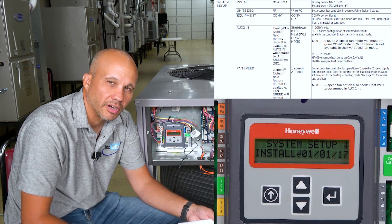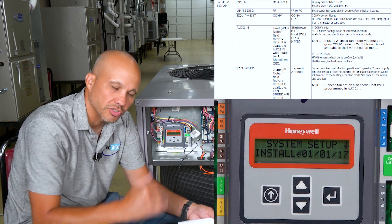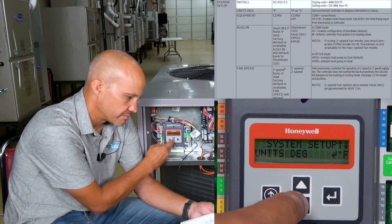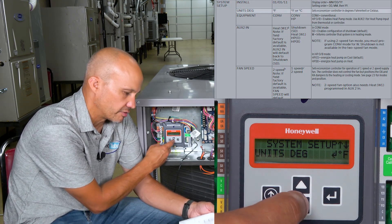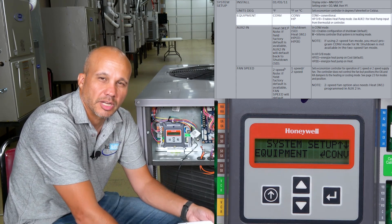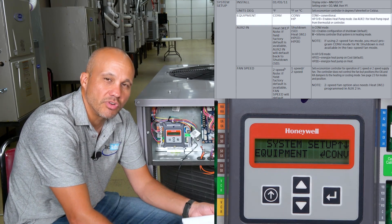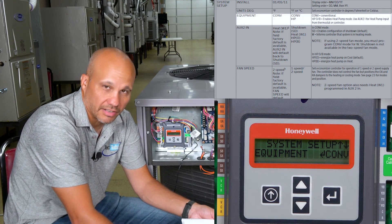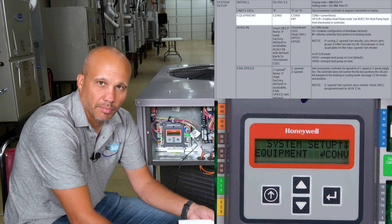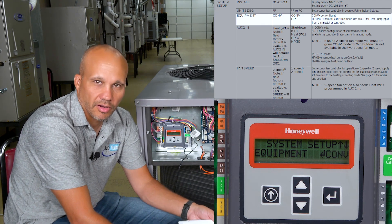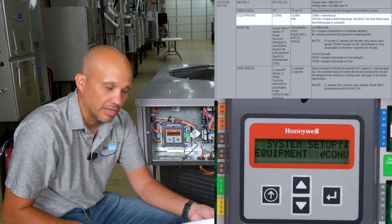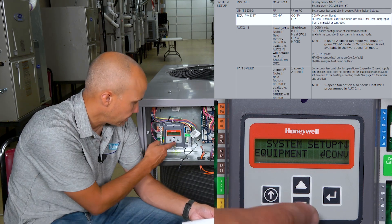The menu goes sequentially in order — we'll skip a few to save time. Install date is self-explanatory. Degrees Fahrenheit or Celsius is self-explanatory. Equipment: Conventional or Heat Pump. Conventional means everything that is not a heat pump — gas heat, electric heat, even a wood-fired pellet heater goes under conventional. Heat pumps are the only thing that goes under Heat Pump.